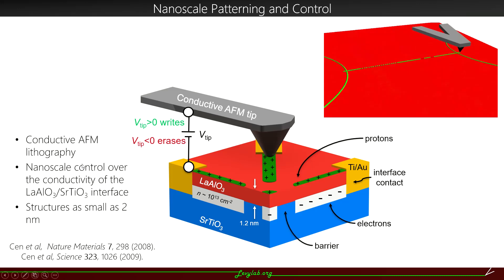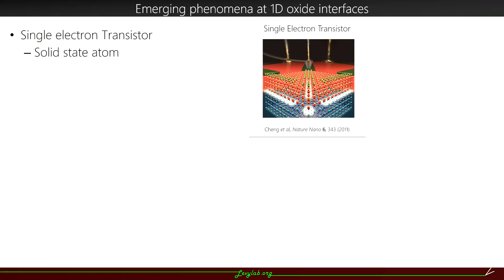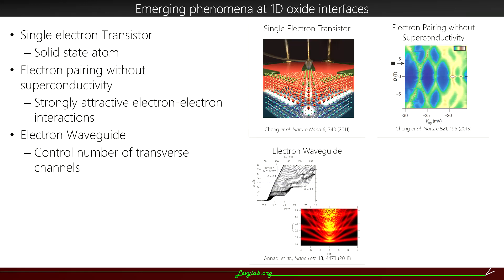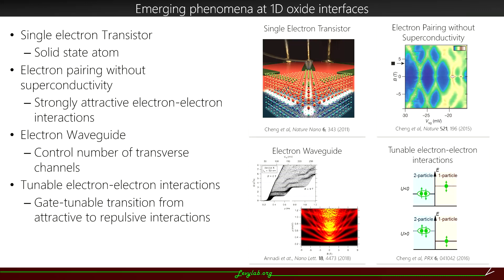And then we can create structures as small as two nanometers using that technique. So we've been able to demonstrate the creation of a single electron transistor. We've discovered a state in which electrons pair but are not superconducting. We can create electron waveguides in which we can control the number of transverse channels, electrically and magnetically, and we can tune electron-electron interactions from attractive to repulsive in these kinds of devices, in addition to many more examples of nanoscale control over the interface.